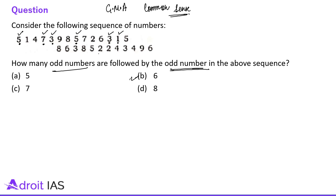So there are 6 odd numbers followed by odd numbers — that is the answer. These type of questions are actually very simple and everybody should solve them. The ideal solving time for this question is around 30 to 40 seconds, maximum — not more than that.